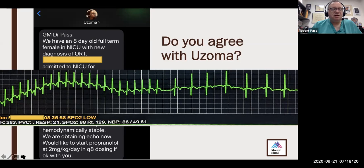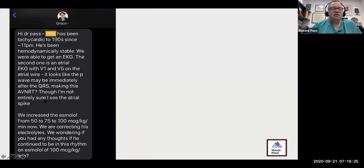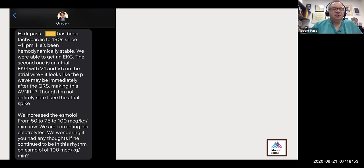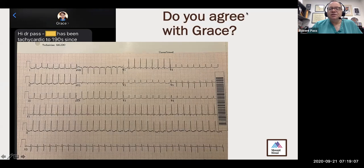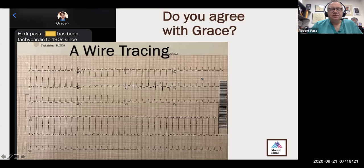We are in agreement with Uzoma, as we should be. Here is a message from Grace Kong. She writes: 'So-and-so has been tachycardic to the 190s since 11 PM. He's been hemodynamically stable. We were able to get an EKG. The second one is an atrial EKG with V1 and V5 on the atrial wire. It looks like the P wave may be immediately after the QRS, making this AVNRT, though I'm not entirely sure I see the atrial spike. We increased the esmolol and are correcting electrolytes. Wondering if you had any thoughts.' Let's look at this tracing and show you the A-wire tracing.